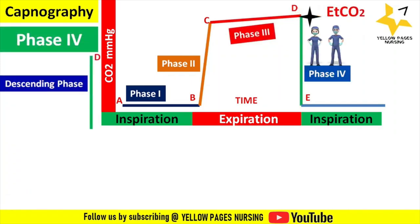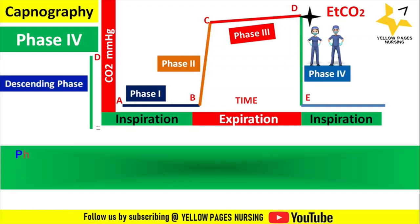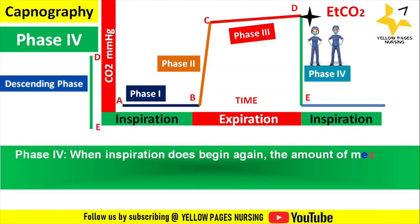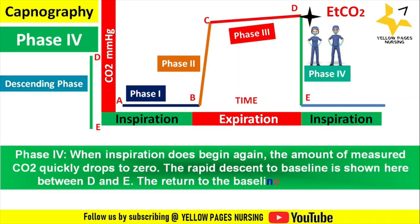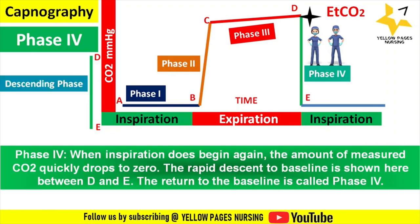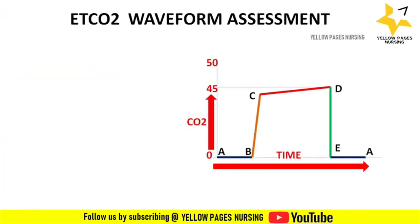Phase four is the descending phase from D to E. When inspiration begins again, the amount of measured carbon dioxide quickly drops to zero. The rapid descent to baseline between D and E is phase four, showing the beginning of the next inhalation as oxygen fills the airway and CO2 level quickly drops to baseline.